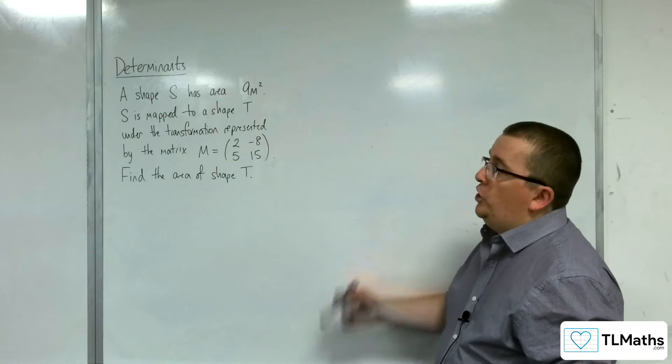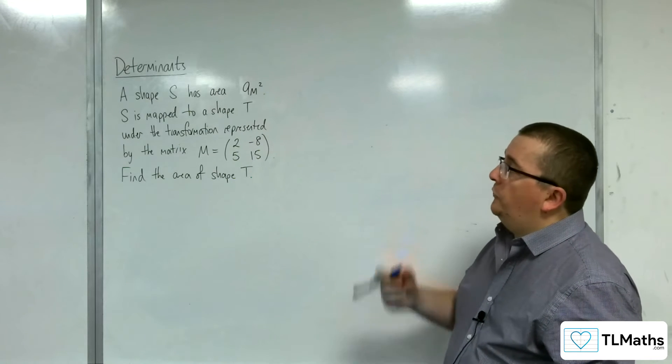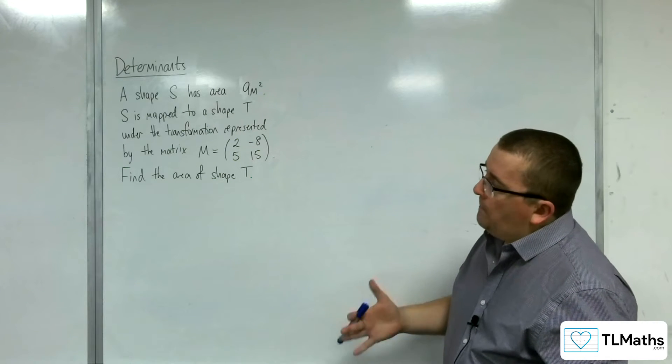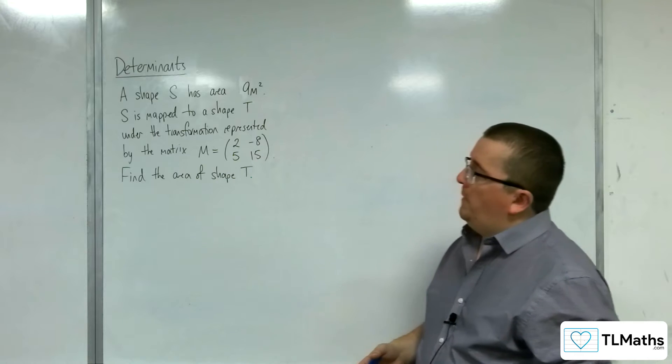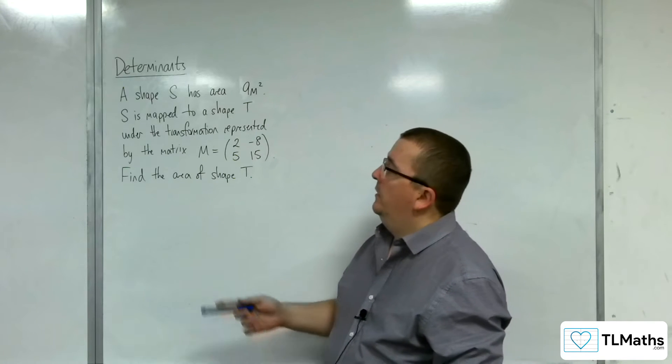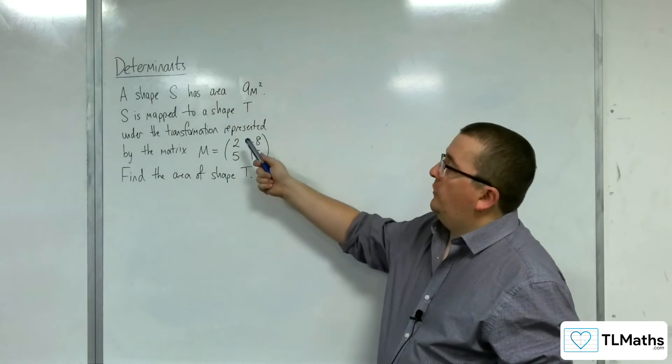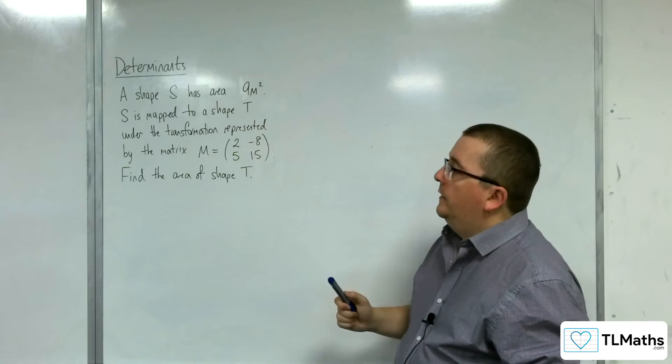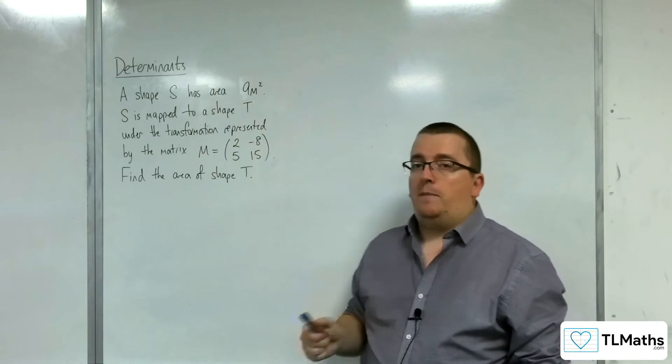In this problem, we have a shape S having an area of 9 square metres. S is mapped to a shape T under the transformation represented by the matrix M, which is a 2 by 2 matrix: 2, minus 8, 5, 15. Find the area of shape T.